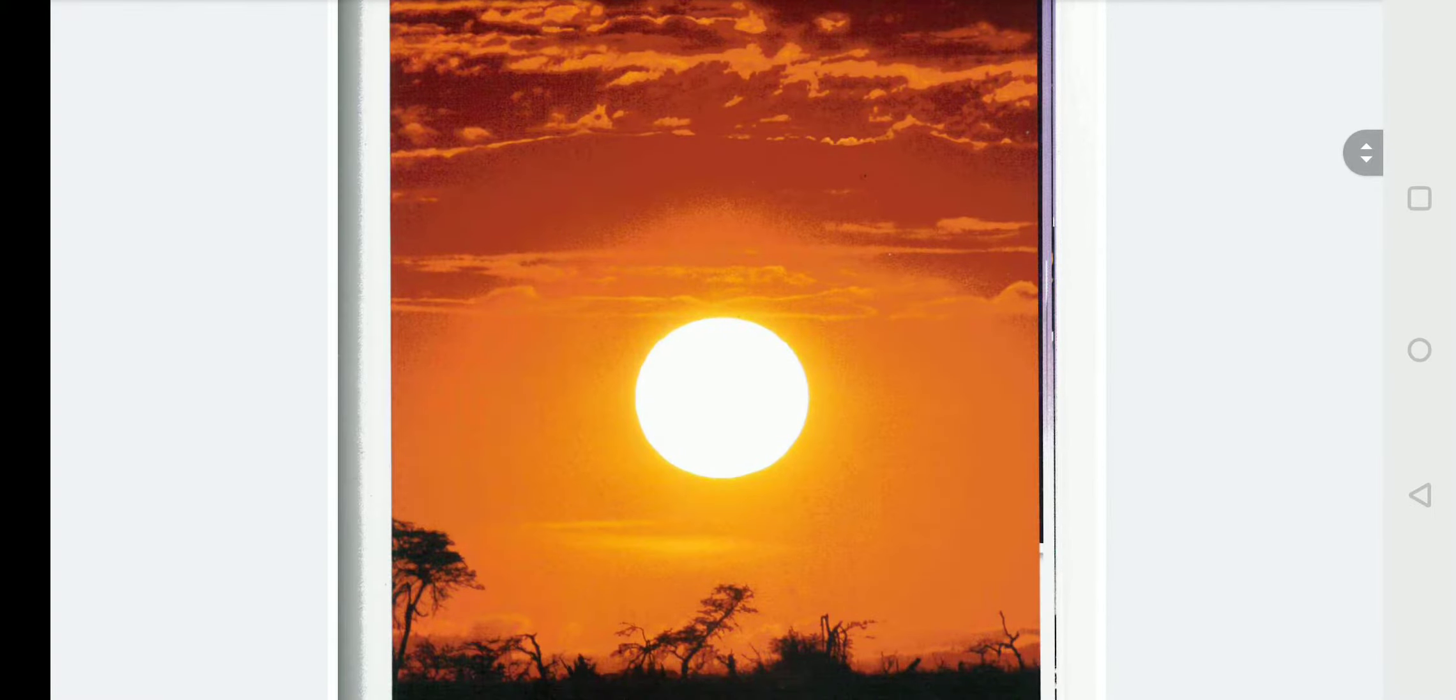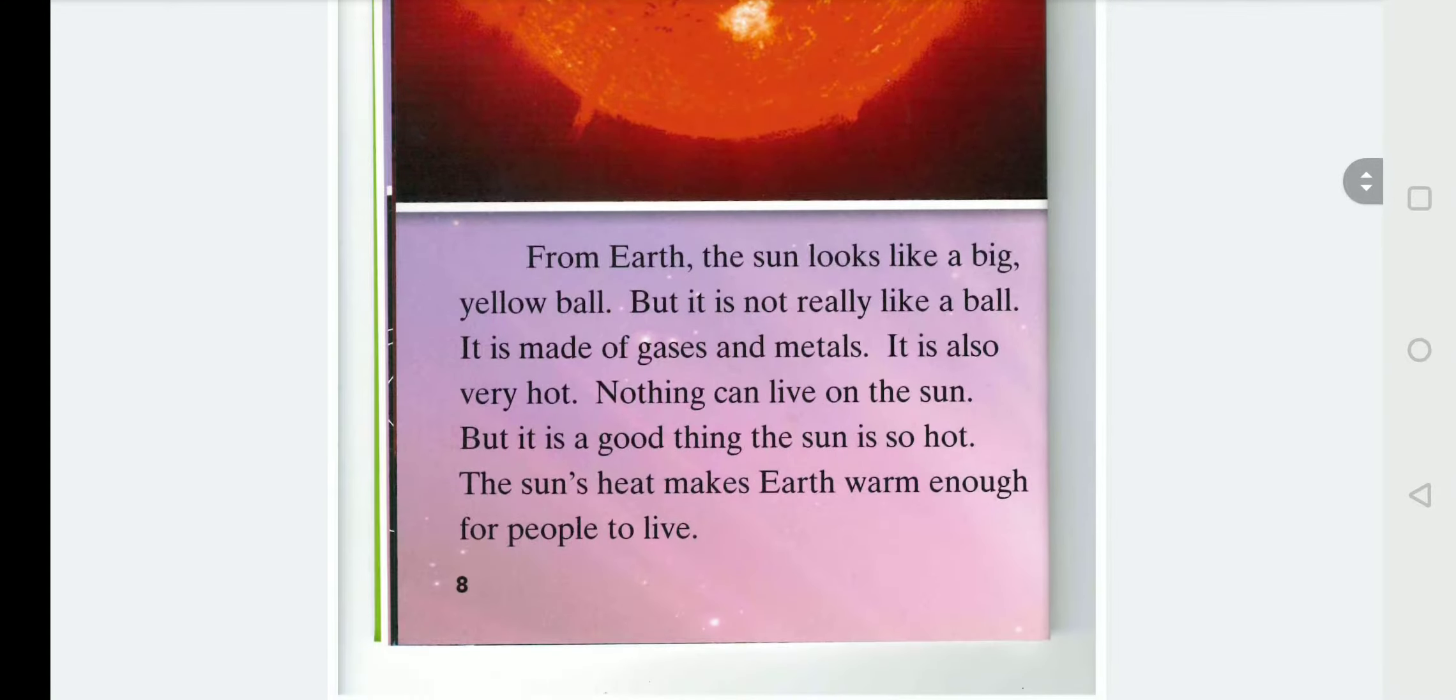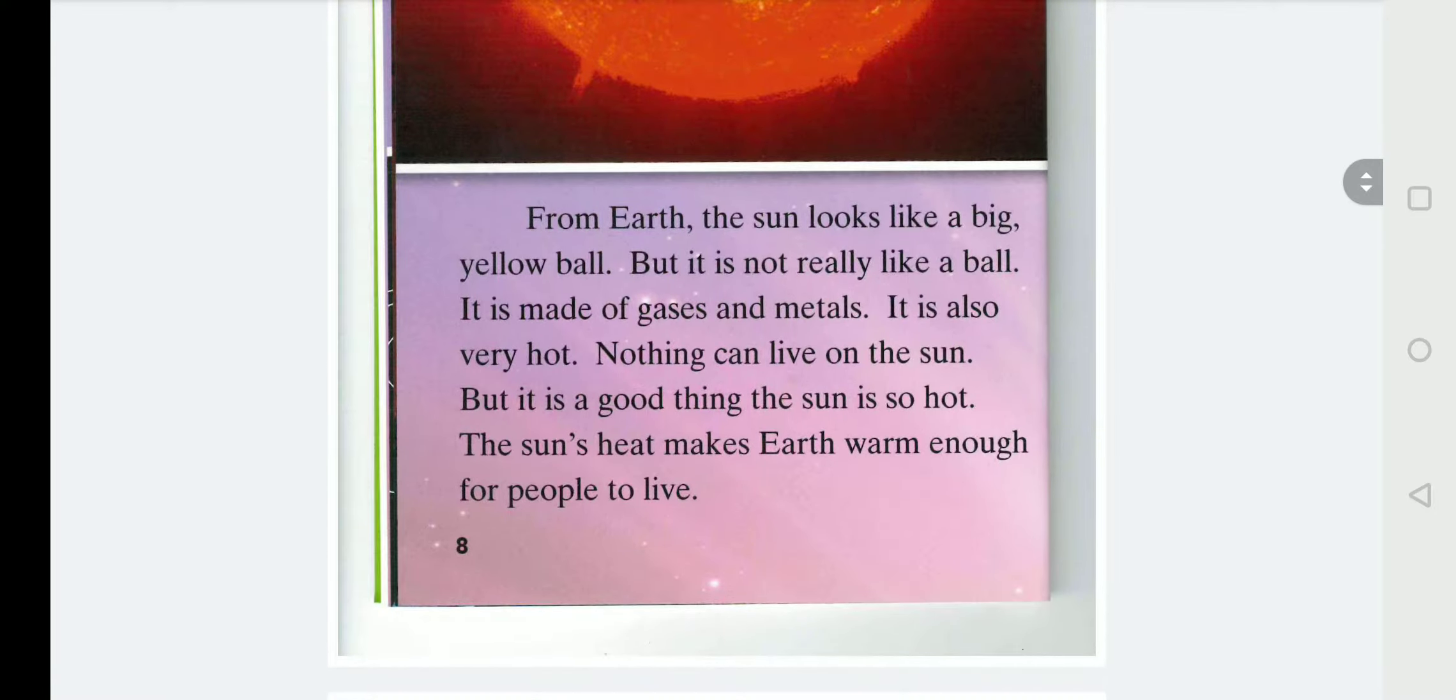Here we have a beautiful picture of the sunset. From Earth, the sun looks like a big yellow ball. But it is not really like a ball. It is made of gases and metals. It is also very hot. Nothing can live on the sun. But it is a good thing the sun is so hot. The sun's heat makes Earth warm enough for people to live. What do you think? Do you think Hong Kong is hot enough? Or is it too hot?